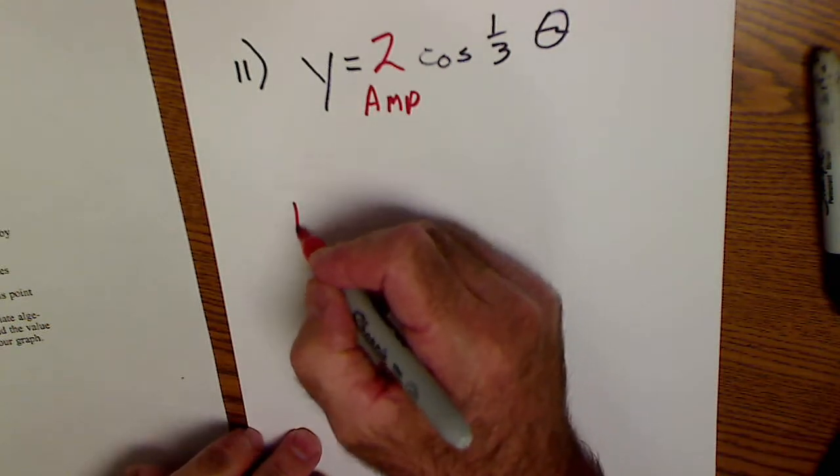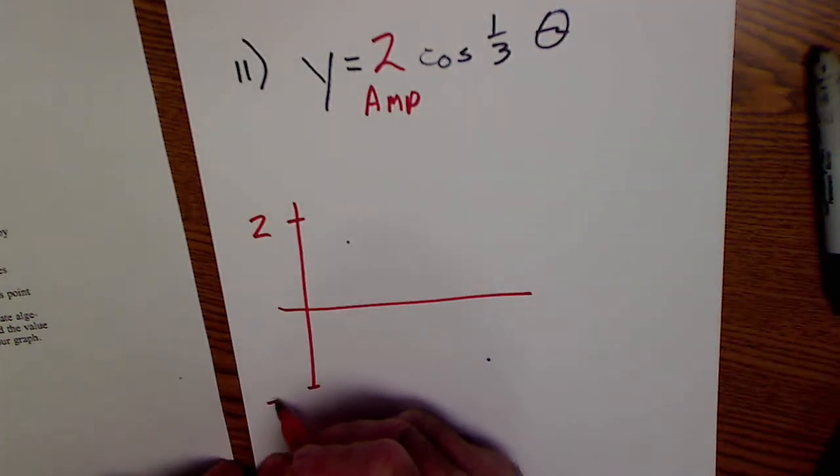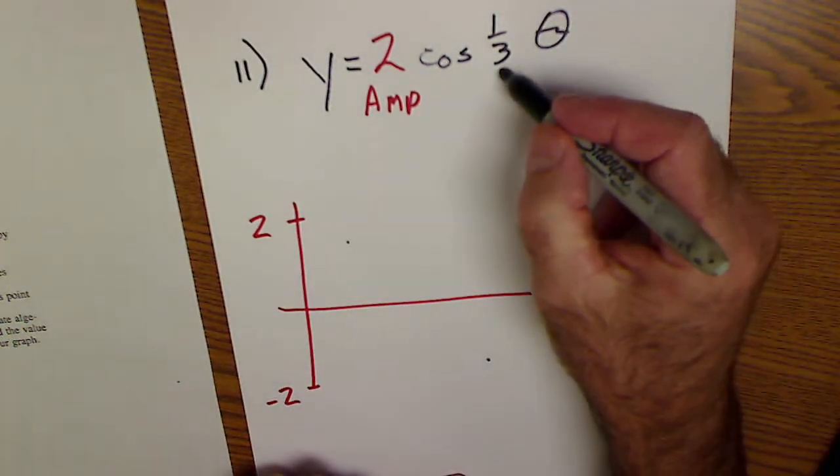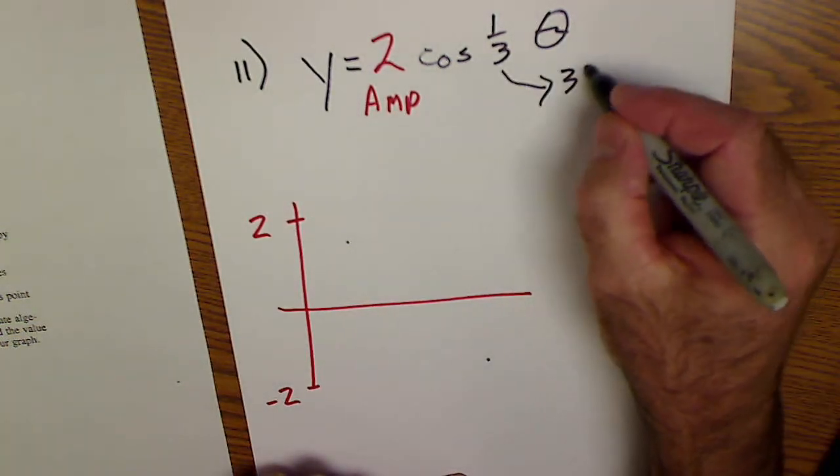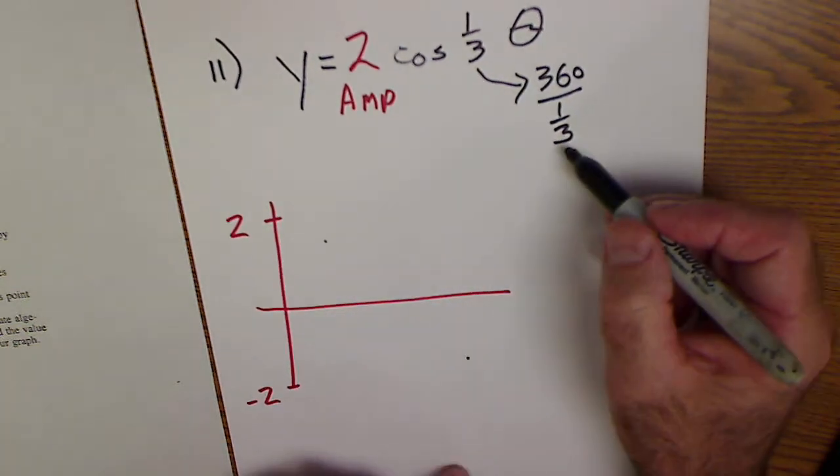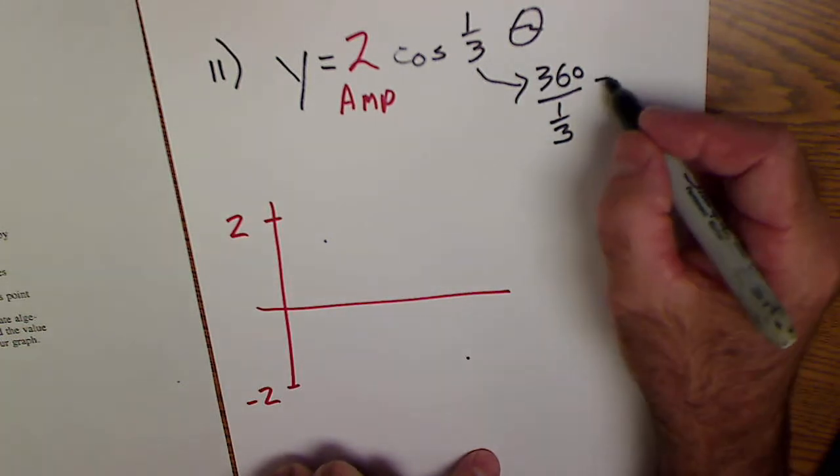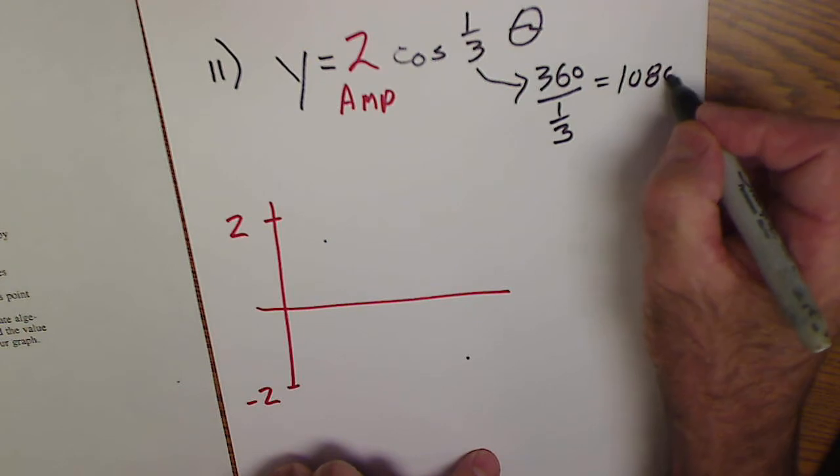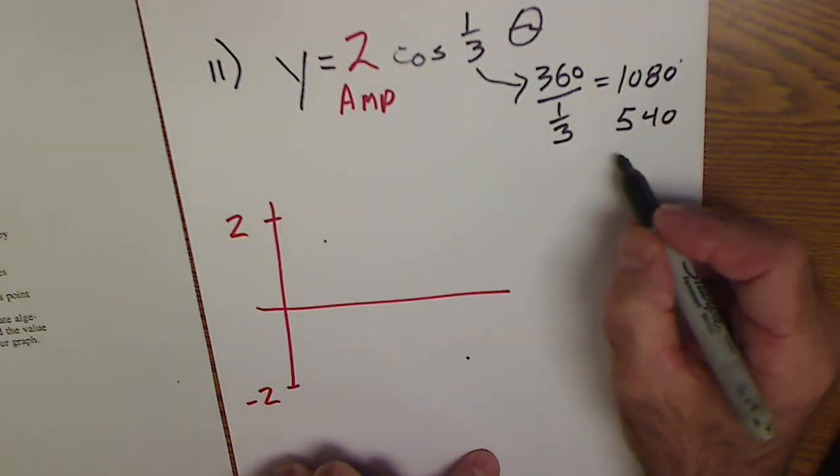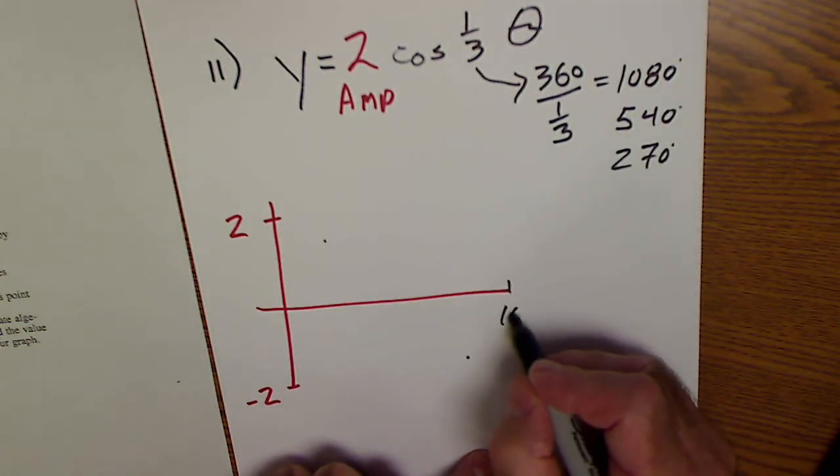This 1 third will be my period. 360 divided by a third. Dividing fractions, same as multiplying by reciprocals. So that'll be 1080. So a full period in 1080. Half cycle in 540. Quarter cycle in 270. So it's going to cycle in 1080. A half cycle in 540.